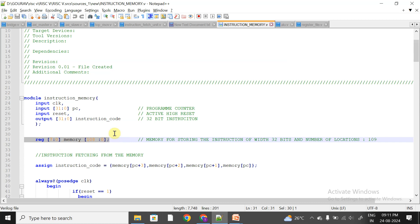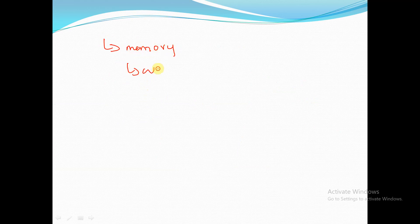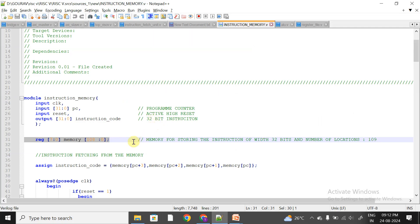Inside the IMU I have declared an internal memory of 8-bit width and a total of 109 locations. The number of locations depends on how many instructions you want to store — you can create that many locations.